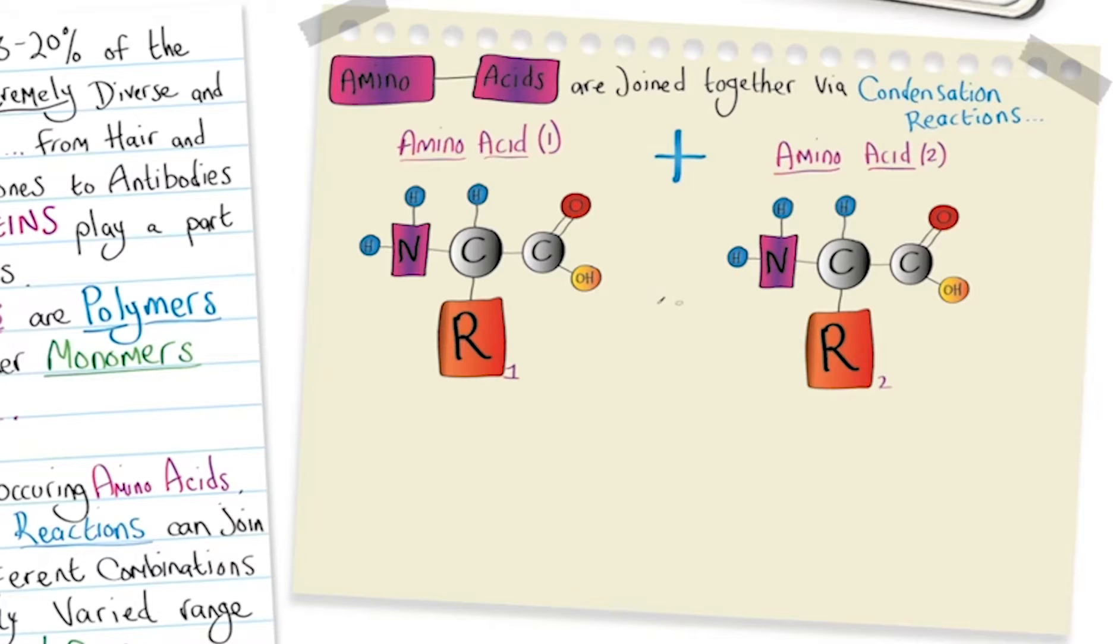These amino acids are going to join together by a condensation reaction. The reaction will take place between the available hydroxyl group of the carboxyl end of amino acid number 1 and an available hydrogen from the amine group of amino acid number 2.